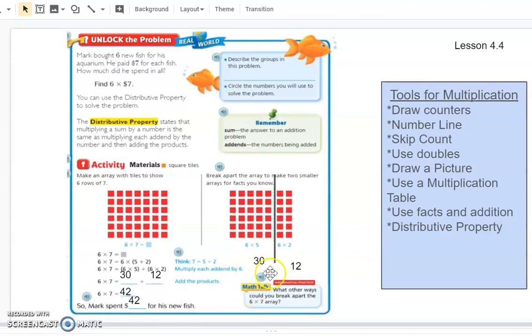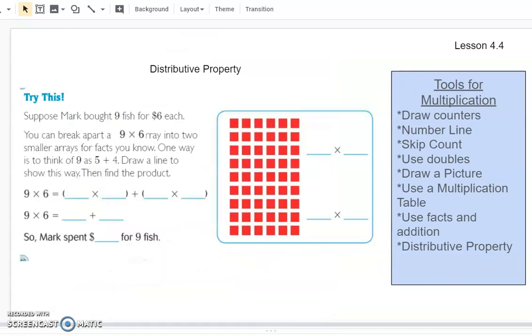So he spent $42 for his new fish that he got. So by dividing that up, solving an easier problem on each side, and then adding the products together helps you to get the answer. Okay. So we're going to practice doing that on the next slide.